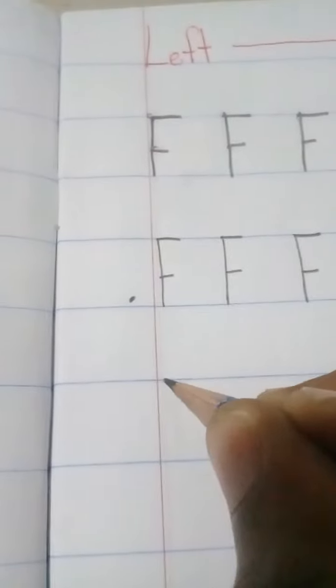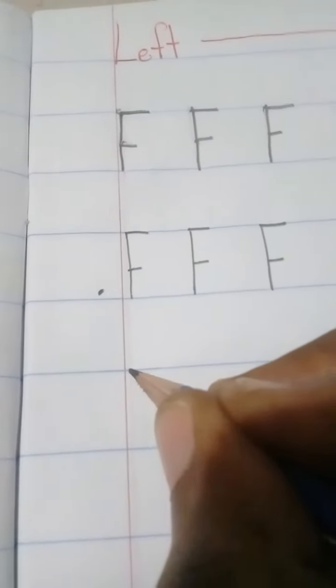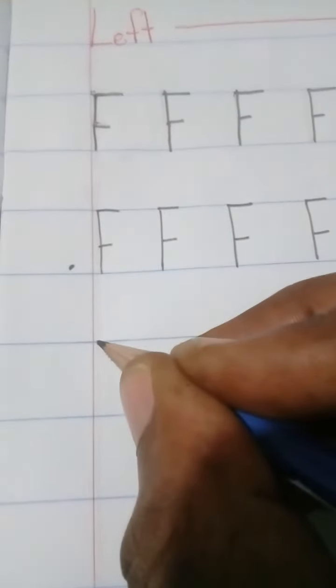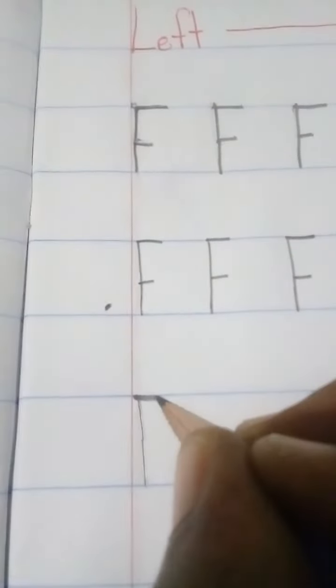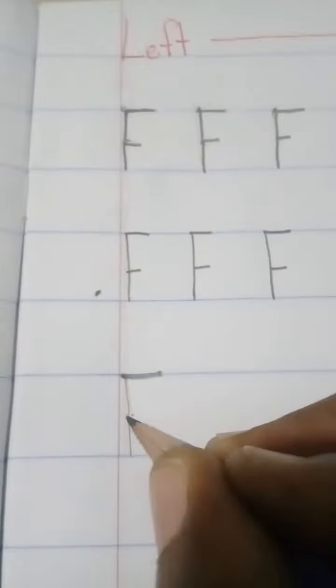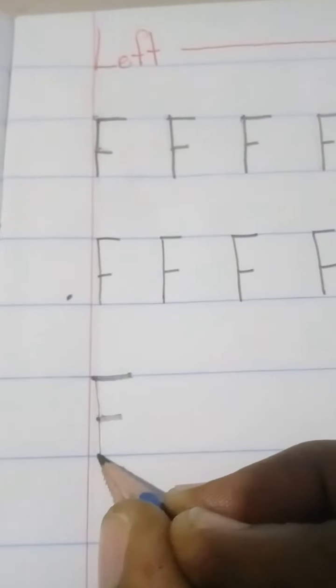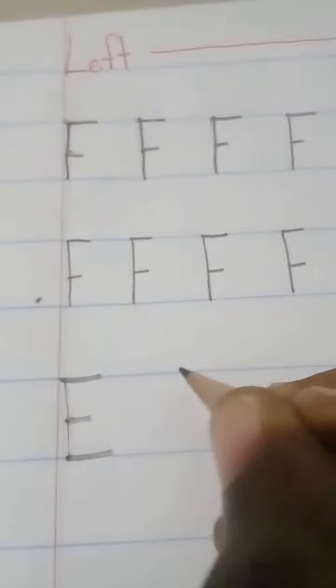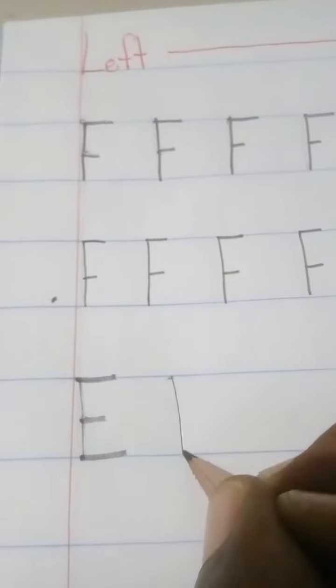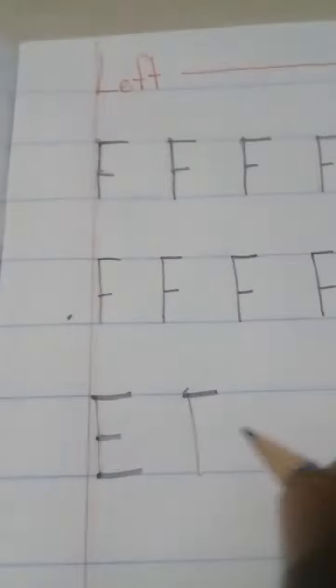For our second letter we do just the same almost. Down across to the top to the right, across in the middle, across on the bottom line. Space, down across to the right at the top.